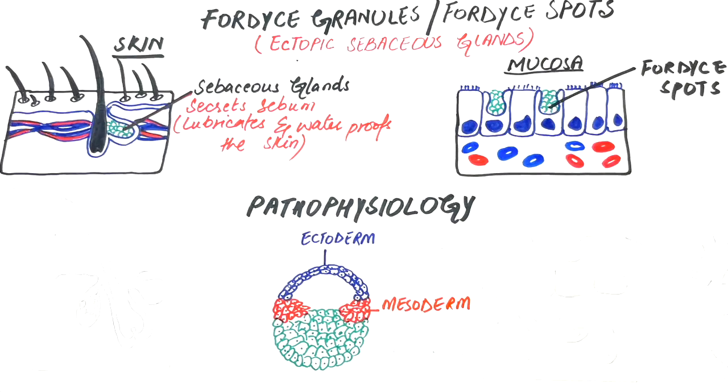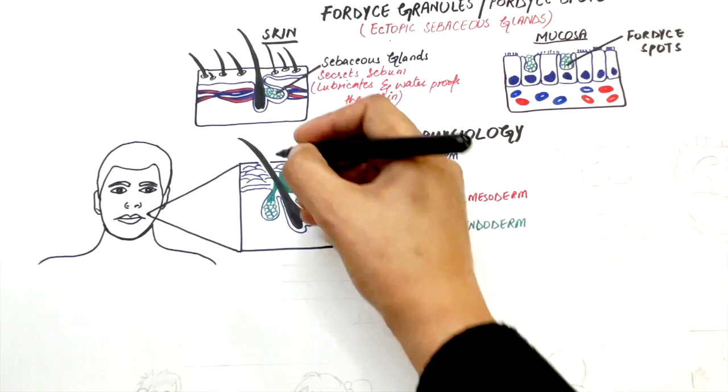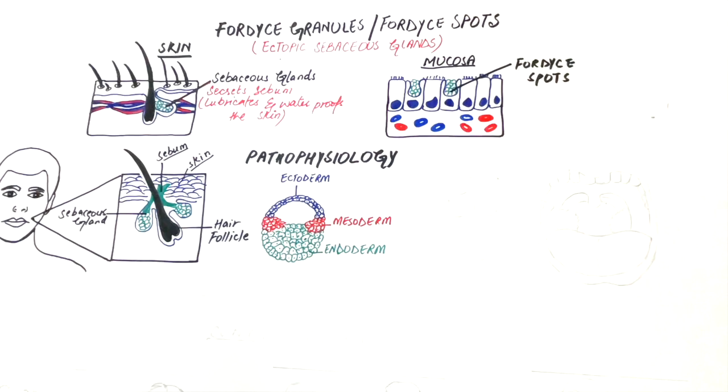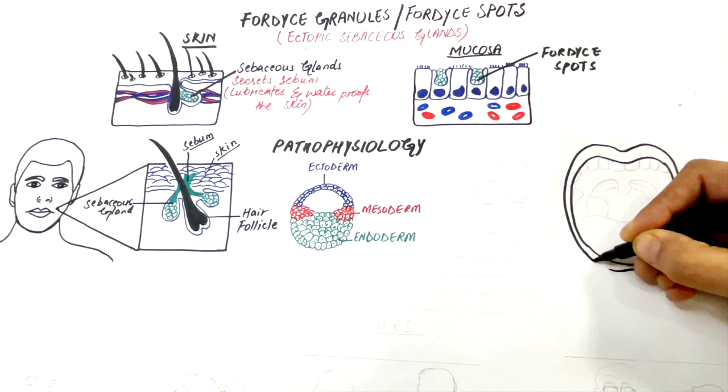The ectodermal germ layer, besides forming some other important structures of the human body, also forms the skin, the oral mucosa, and these sebaceous glands, which as said before become an integral part of the hair follicles on the skin and normally should not be located in sites other than the hair follicles.